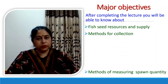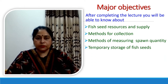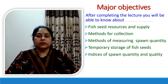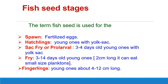Methods of measuring spawn quantity, temporary storage of fish seeds, indices of spawn quantity and quality, and monitoring and evaluation of the fish seeds. Studies and reviews based on existing literature and field surveys show a clear imbalance between the supply and demand. It is very clear that there is a need to know about increased production of quality seeds from natural as well as laboratory resources using the latest techniques.